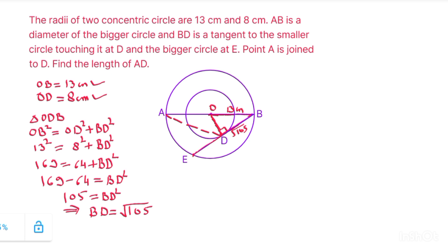EB is a chord of the bigger circle and OD is perpendicular to the chord from the center. We know that a perpendicular from the center divides the chord into two equal halves, so ED will be equal to BD. So this side will also be square root of 105.